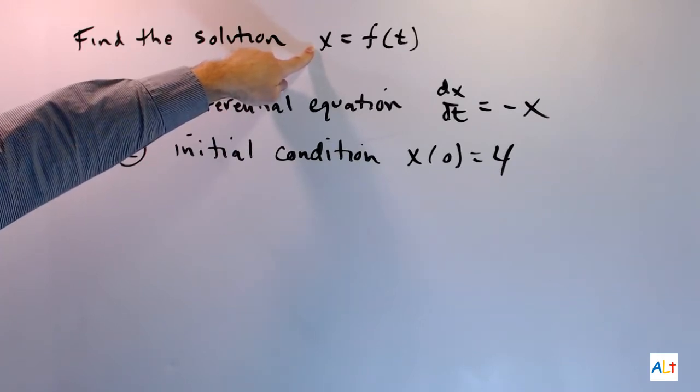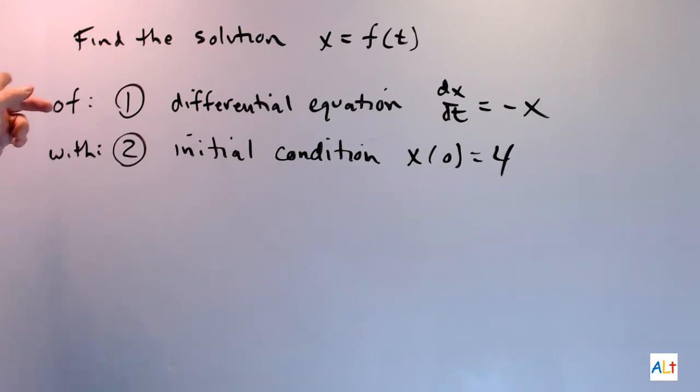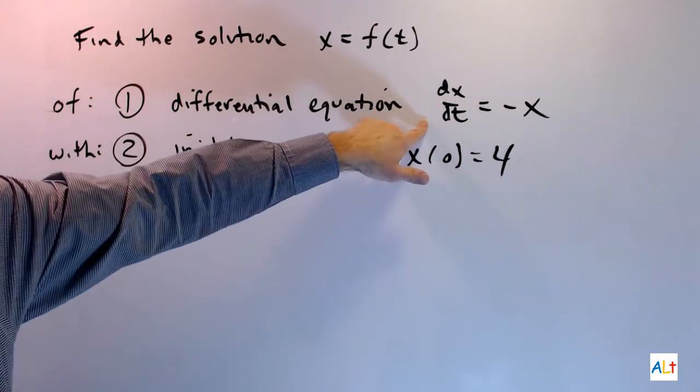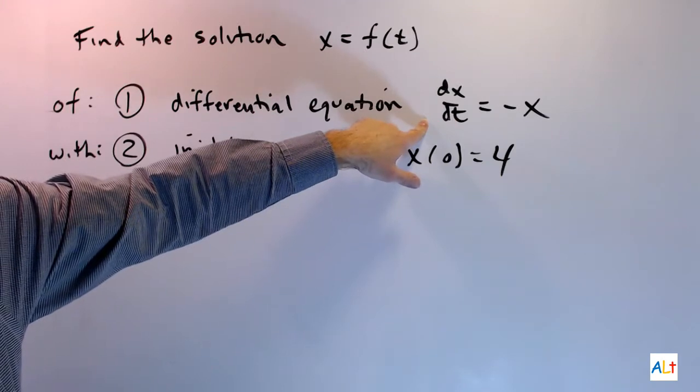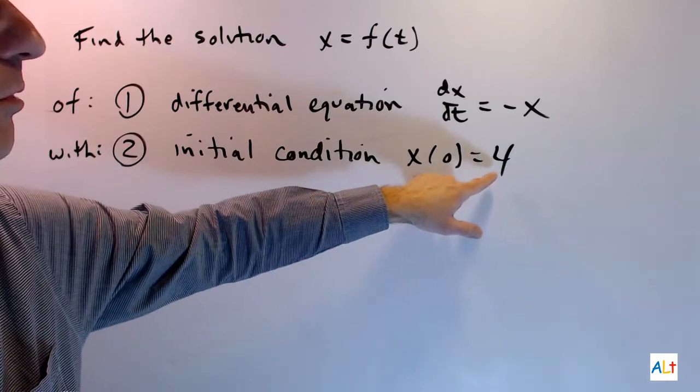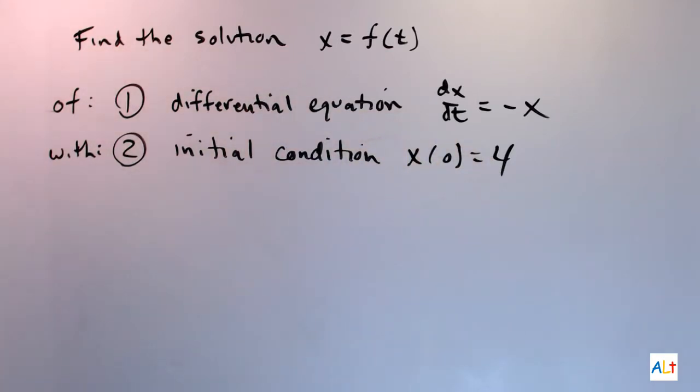So here's the differential equation dx over dt equals negative x. That's essentially the same thing as y prime equals negative y. And now we have this initial condition x of 0 equals 4. What's that all about? Well, let's take things one step at a time. First, let's just solve the differential equation.